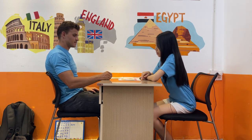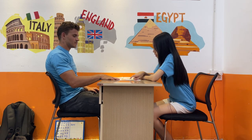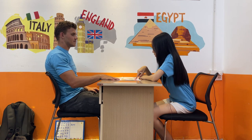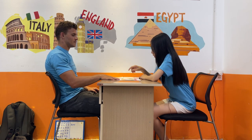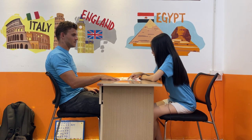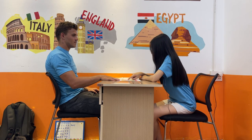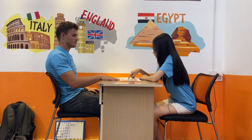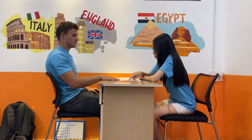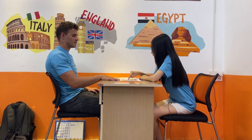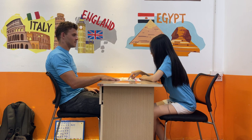In picture A, the computer is on the bed, but in picture B the computer is under the bed. In picture A there is one fish, but in picture B there are two fish. In picture A the table is pink, but in picture B the table is blue.